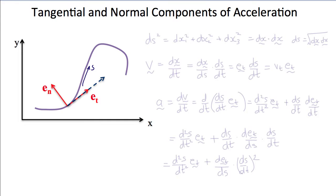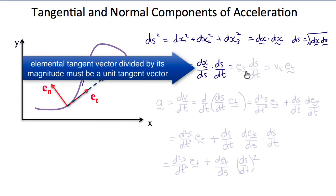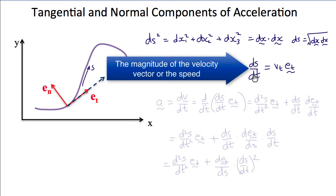This requires a little differential geometry. The key trick is to create a parameter s — think of it as arc length — that varies continuously along the trajectory of the moving particle. We define ds, the length of any segment along the trajectory, using Pythagoras: ds² = dx₁² + dx₂² + dx₃², or in vector notation dx·dx, so ds = √(dx·dx). The velocity dx/dt can therefore by the chain rule be written as (dx/ds)(ds/dt), where dx/ds is a unit vector along the tangent — that's e_t — and ds/dt is the magnitude of the velocity.